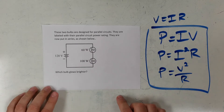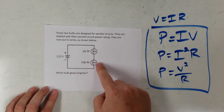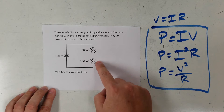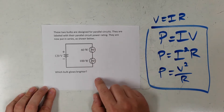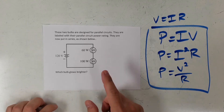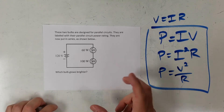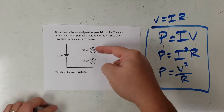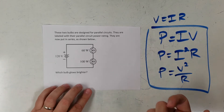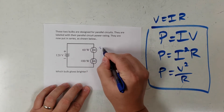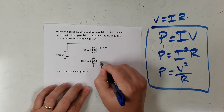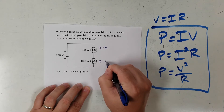Here's my second problem. I've got two bulbs designed for parallel circuits and I put them in series. Which one glows brighter? I need something that relates power with resistance. Based on what we said before, the lower-power bulb has bigger resistance, and the higher-power bulb has smaller resistance.